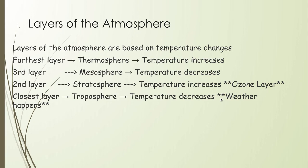Weather happens in the troposphere. Above the troposphere is the stratosphere, where temperature increases as you go up — that's how we know we've entered a different layer. What I really want you to know about the stratosphere is that that's where the ozone layer is, and the ozone protects us from UV rays. Our third and fourth layers are the mesosphere and thermosphere, where temperature decreases in the mesosphere and increases in the thermosphere — 'thermo' means hot or heat.